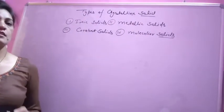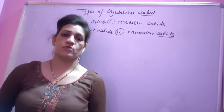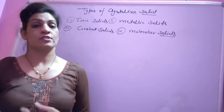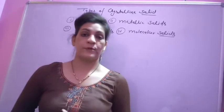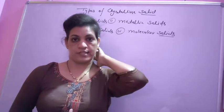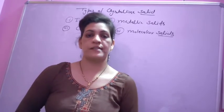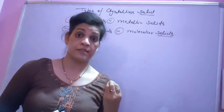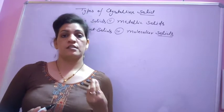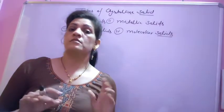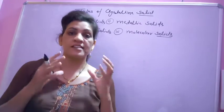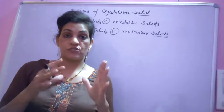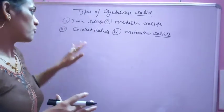Hello everyone! Now we start with the types of crystallized solids. In the first video, we did a type of solid. I have told you that crystallized solid is a true solid. Depending upon the nature of the constituent particle and the interaction between them, the force of interaction takes place between the crystallized particles. Crystallized solid is of four types.